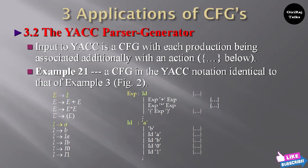E tends to I — expression is ID here. I is an ID here. E tends to E plus E means E is an expression, plus an expression. E tends to E star E — expression star expression. E tends to (E) — within the parenthesis there is an expression.